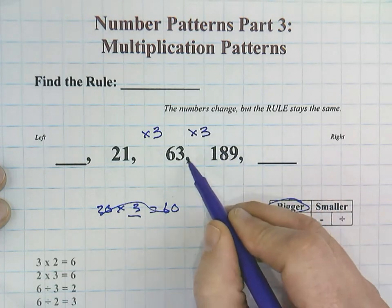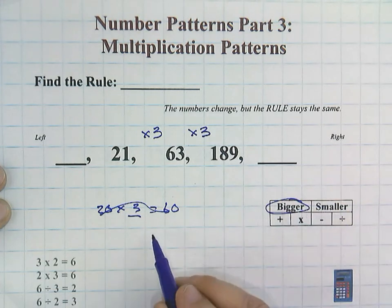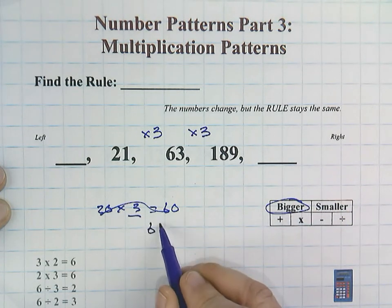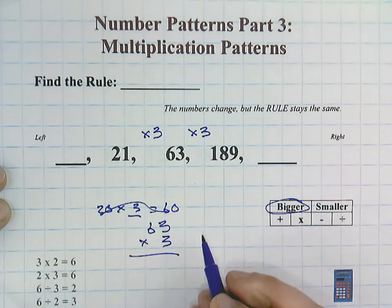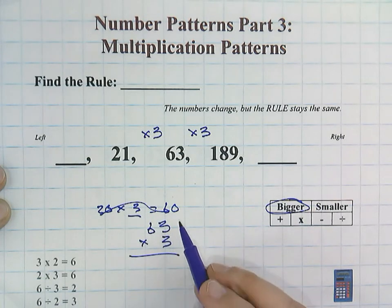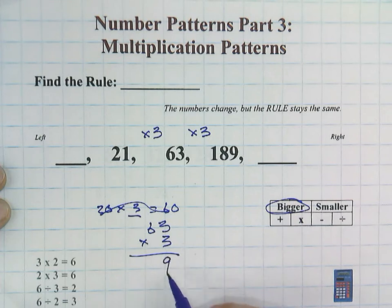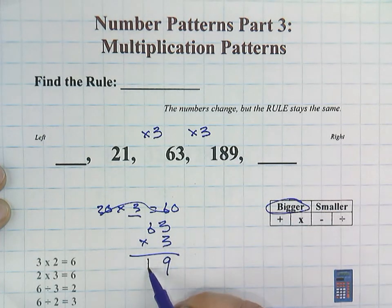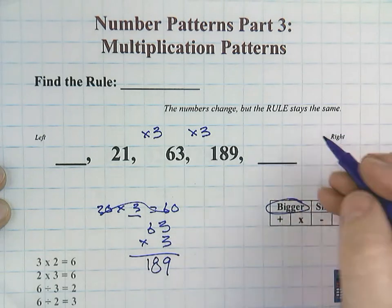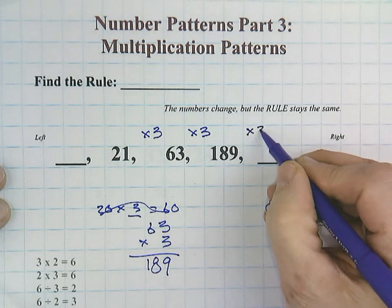So 63 times 3, let's just check. 3 times 3 is 9. And so far, that's checking out. There's our 9. And then 3 times 6 is 18. No regrouping for this one. So yeah, we're good. So this is obviously a times 3 rule.